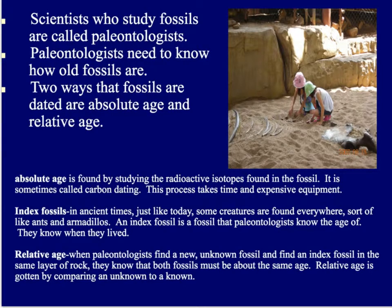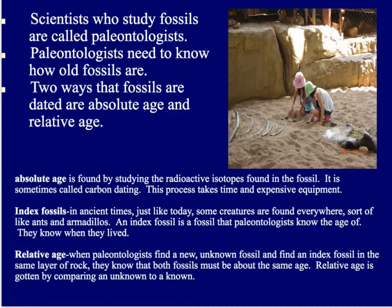Now, the scientists who study fossils are called paleontologists. Paleontologists need to know how old fossils are. There are two main ways that fossils are dated: by absolute age and by relative age. Absolute is something that we know for sure. Absolute age is found by studying the radioactive isotopes found in the fossil — it's sometimes called carbon dating. This process takes time, it's expensive, it's got to be done in a laboratory, and it takes a lot of equipment.